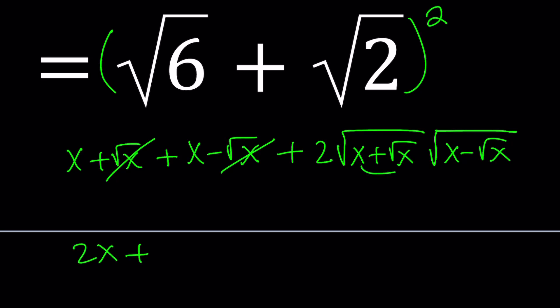And then this expression, like these two expressions can be multiplied under the same radical. And that basically gives us from difference of two squares x squared minus x, which we can write as 2 times the square root of x squared minus x.